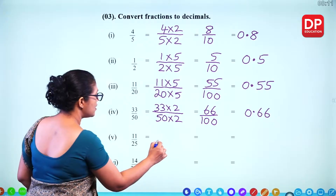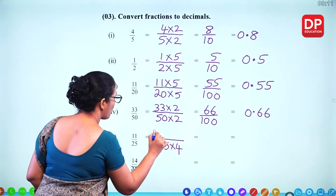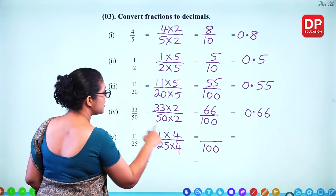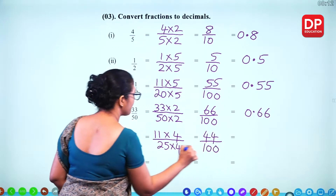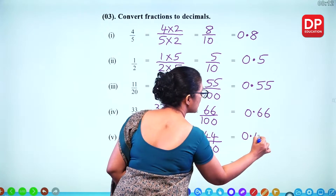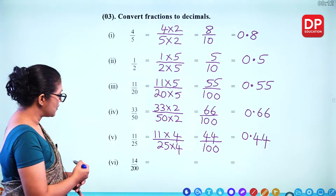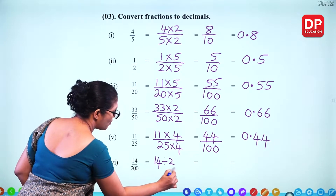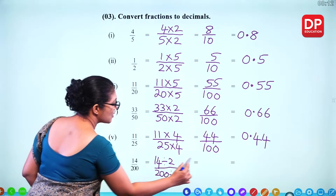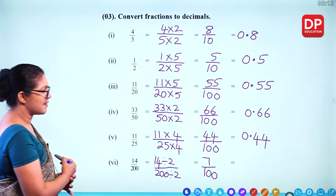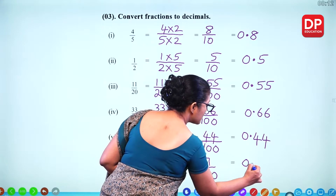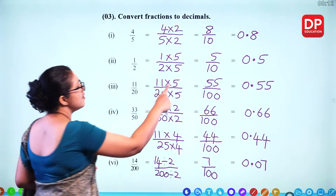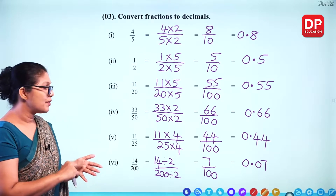For 14 over 200, divide both numbers by 2 to get 7 over 100, which gives 0.07. When you divide by 100, you get 2 decimal places; when you divide by 10, you get 1 decimal place; and when you divide by 1000, you get 3 decimal places.